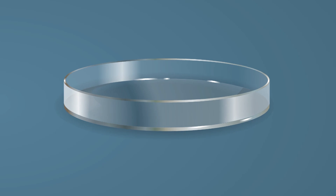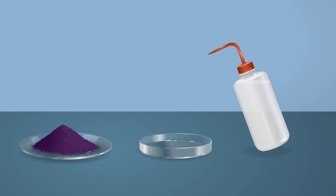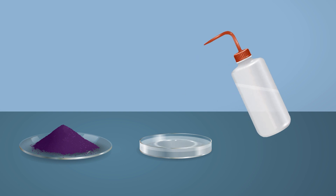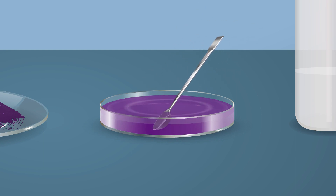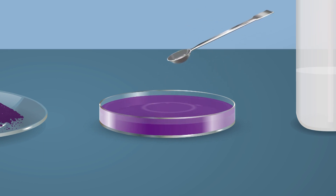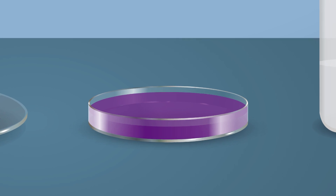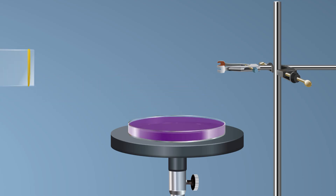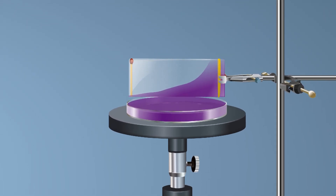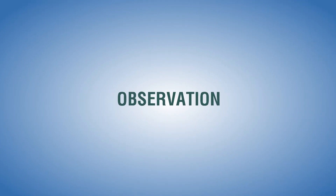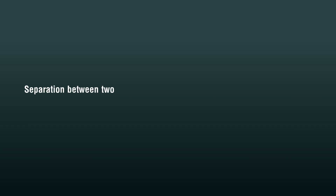Tie one end of the pair of slides together with a rubber band. Fix a matchstick between the free ends. Take a dish, clean and dry it well, fill half of the dish with water, and add potassium permanganate for coloring. Clamp the arrangement on a stand and dip the arrangement into the water in the dish.